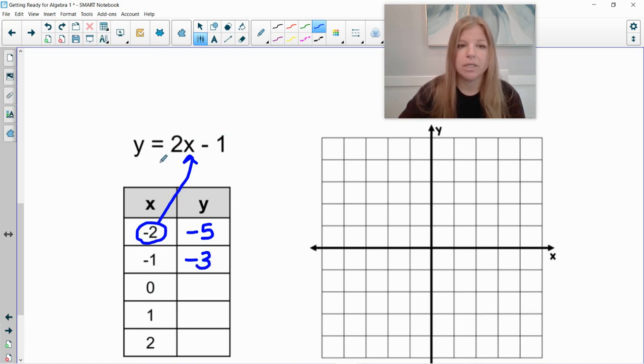Let's plug in a 0 now. What's 2 times 0? 0. 0 minus 1? Negative 1. Now we plug in positive 1. 2 times 1 is 2. 2 minus 1? Positive 1. And then the last one, 2 times positive 2 is 4. 4 minus 1 is 3.